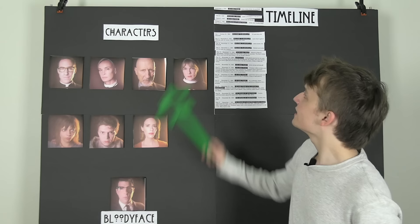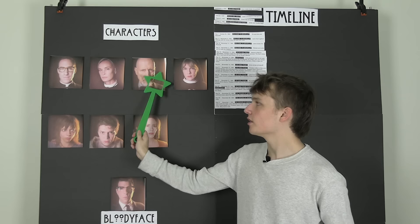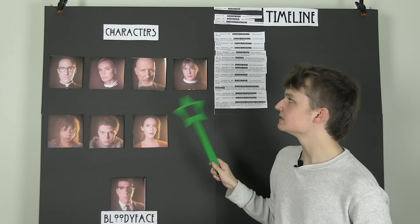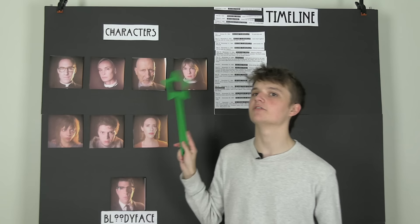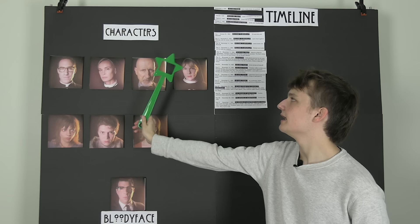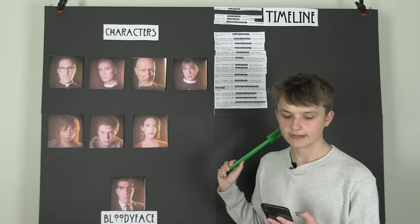We get a flashback to October 4th, 1962 — when the church first took control of the asylum. Arden was already working there, but Sister Jude, Timothy Howard, and the rest of the nuns started working there then. The tuberculosis epidemic was at its worst with over 100 bodies leaving the asylum every single day. We see the beginning of the working relationship between Arden and Timothy, and Arden tells him about his plans to create 'superhumans' — really just monsters infected with tuberculosis.